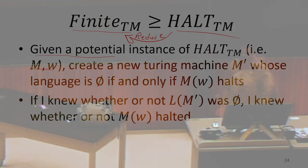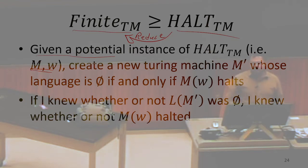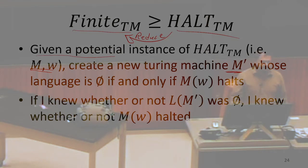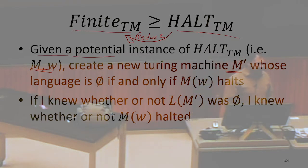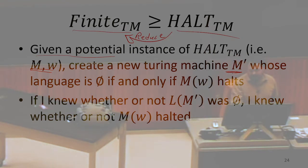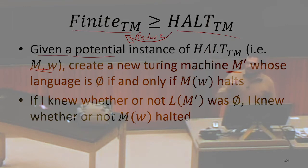For this instance of HALT — for this machine-input pair where we want to answer the halting question — we're going to use those to build a brand new machine, let's call it M prime. The idea of M prime is that by answering the FINITE question about M prime, that gives us the answer to the halting question for M and W. We're going to use M and W to create M prime, so that if we can answer whether the language of M prime is finite, that secretly answers whether M halted on W.